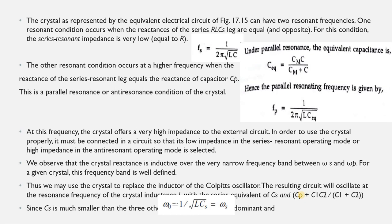There are two resonant frequencies. One occurs when the reactances of the series RLC leg are equal and opposite — at this condition, the series resonant impedance is very low and equals R. The series resonant frequency is Fs = 1 / (2π√LC).